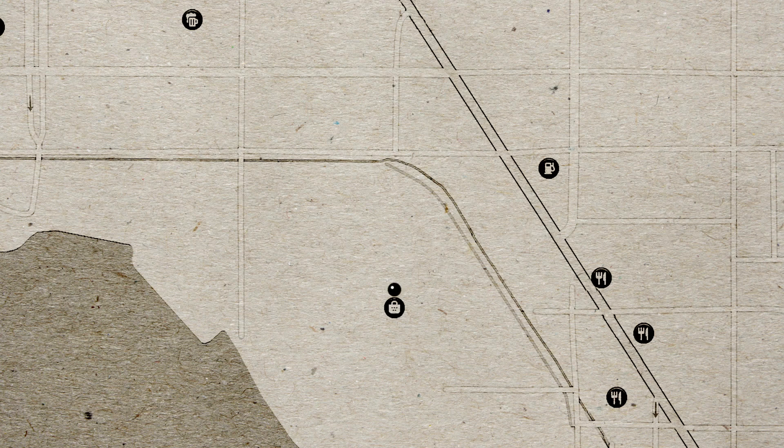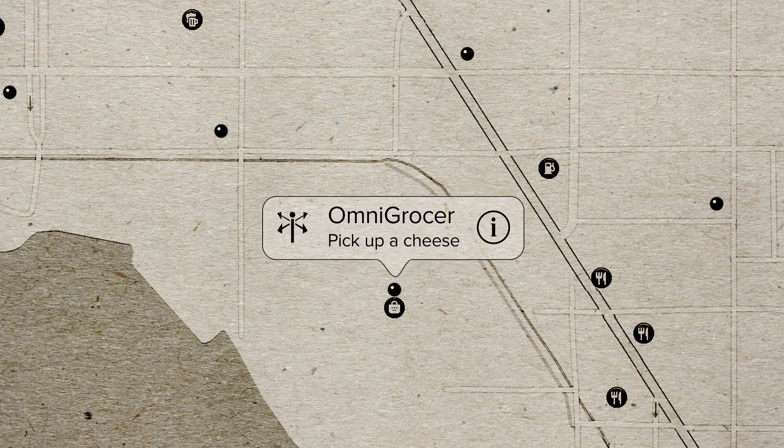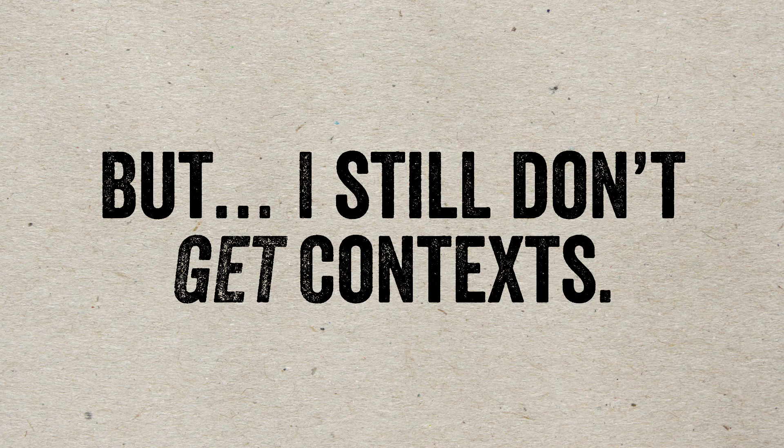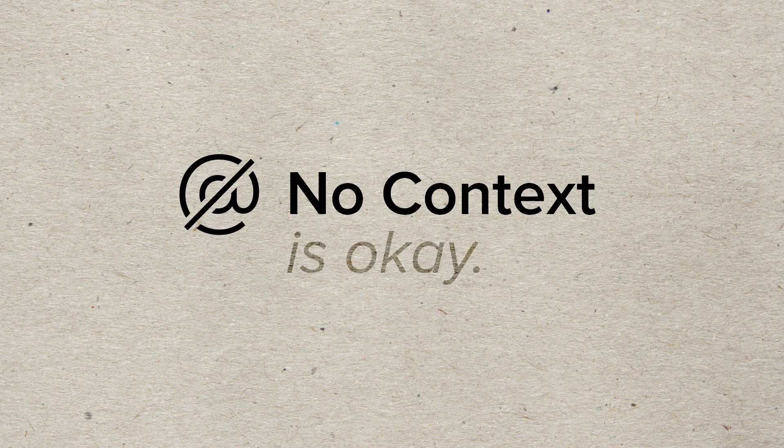On iOS, OmniFocus can also use your location to alert you that you're near a specific context, like the grocery store. You can get a lot out of OmniFocus without ever using contexts, but they can be a very helpful tool in deciding what to do next.